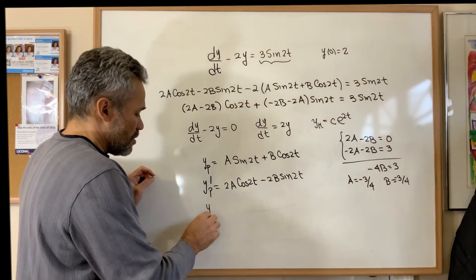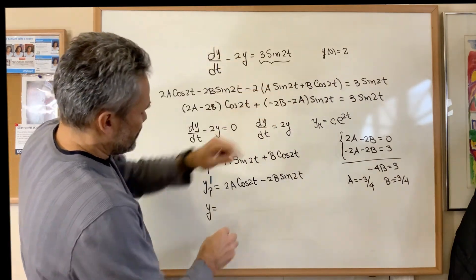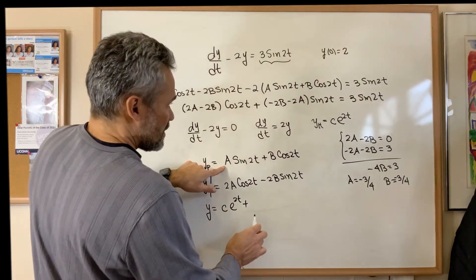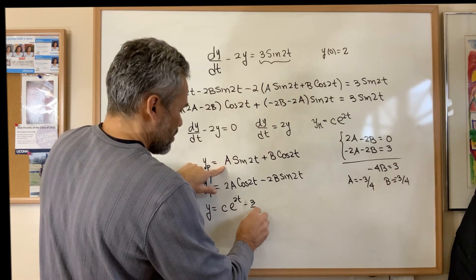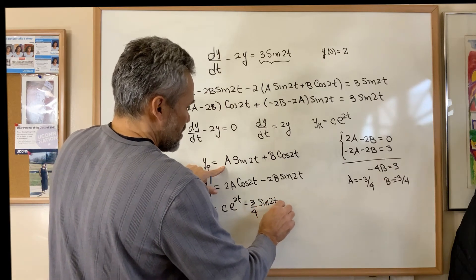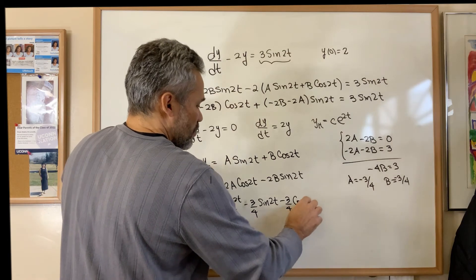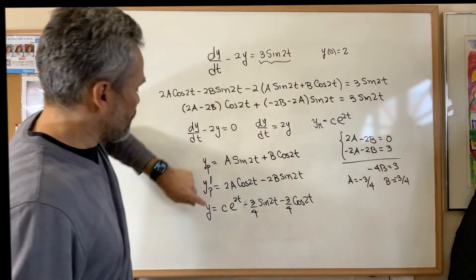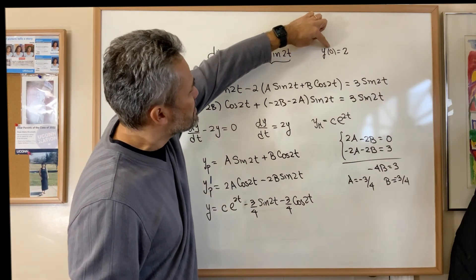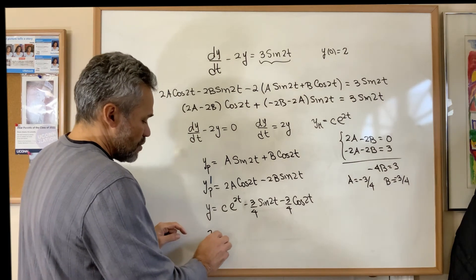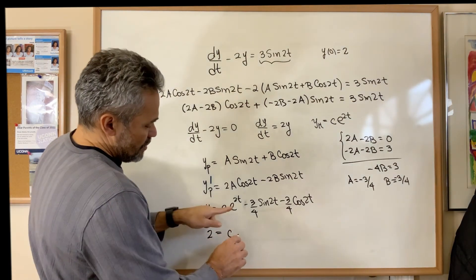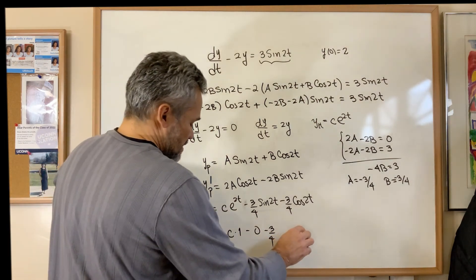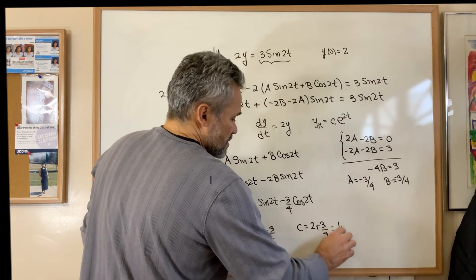That means the general solution is the solution of the homogeneous, which is c e to the 2t, plus the particular solution, which is minus 3/4 sine of 2t minus 3/4 cosine of 2t. Now we need to find the constant c that makes the initial condition true. The initial condition indicates that when t is 0, y must be 2. So we replace: 2 equals c e to the 0, which is 1, minus 3/4 times 0, minus 3/4. That means c is 2 plus 3/4, which is 11/4.